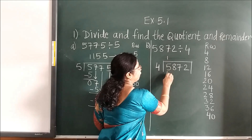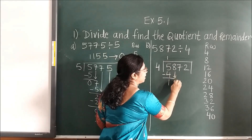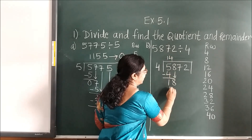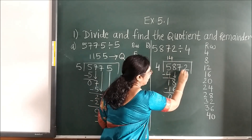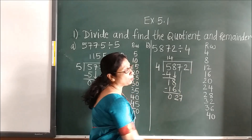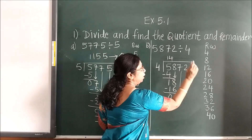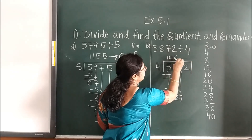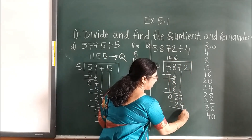4 minus 4, subtract 1. Take this number down — 8. 4 fours are 16. Subtract. Again take this number down — 27. Less than 27: 24. So 6 fours are 24, you will subtract here.